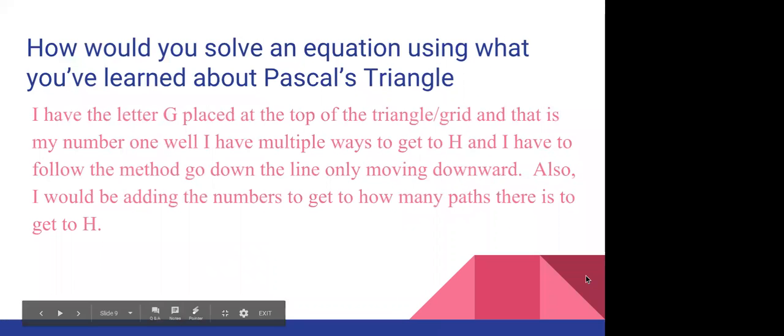How would you solve an equation using what you've learned about Pascal's Triangle? You start with the letter G placed at the top of the triangle or the grid. And that is my number 1. So then you will have multiple ways to get to H or I. Having the following method, going down the lines only moving downward.